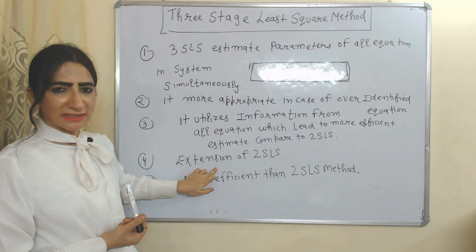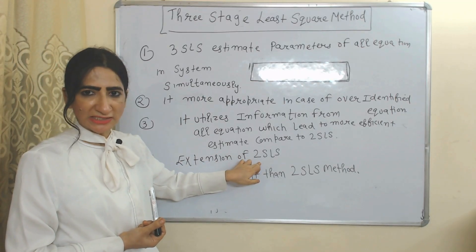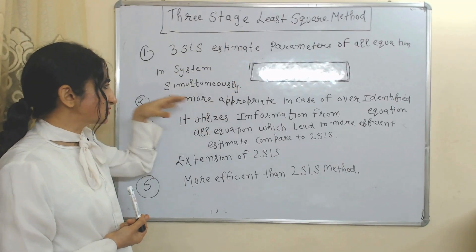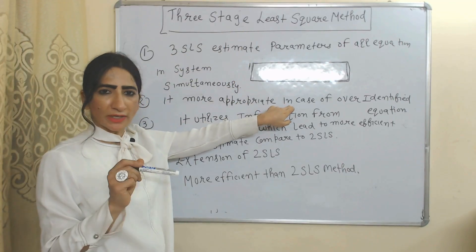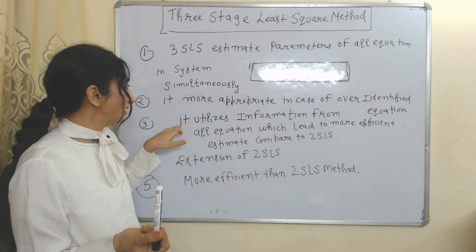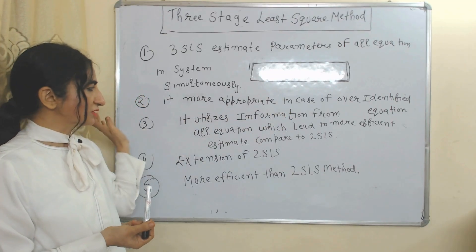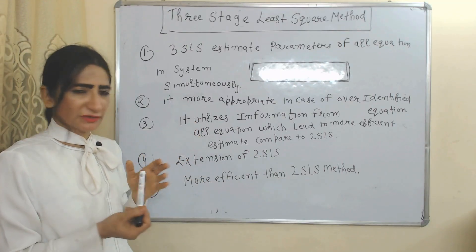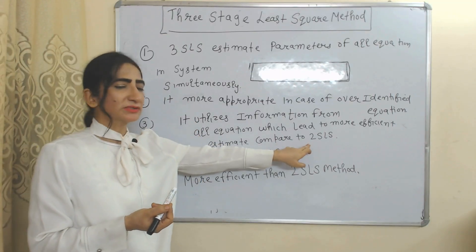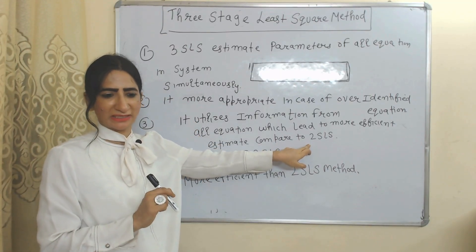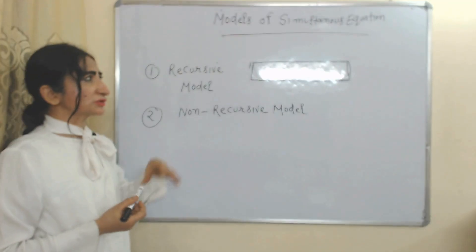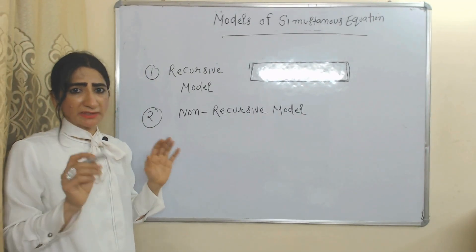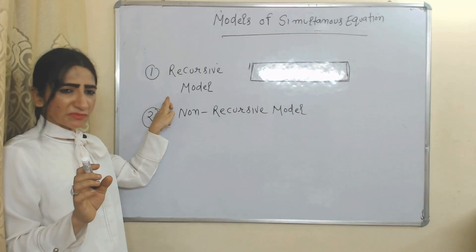Three-Stage Least Squares is more appropriate in the case of over-identified equations. This method utilizes information from all equations simultaneously, which leads to more efficient results compared to the Two-Stage Least Squares method. Now we will see the models of simultaneous equations, which are mainly divided into two parts: recursive model and non-recursive model.